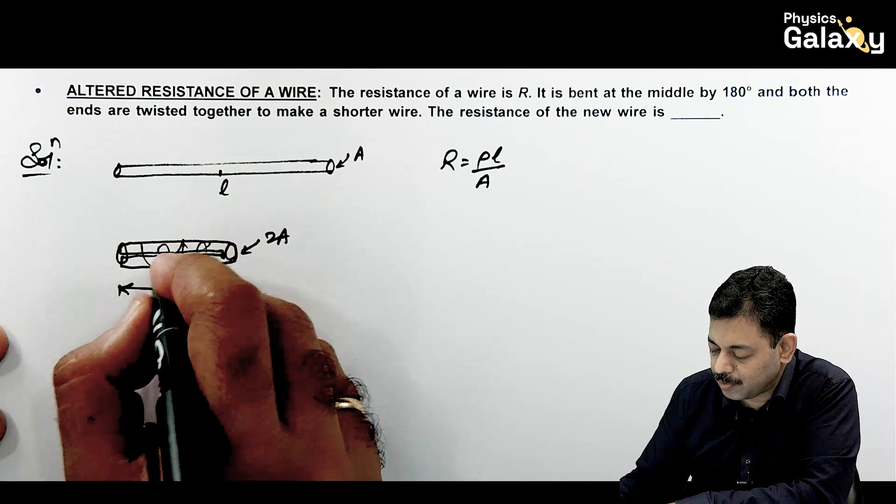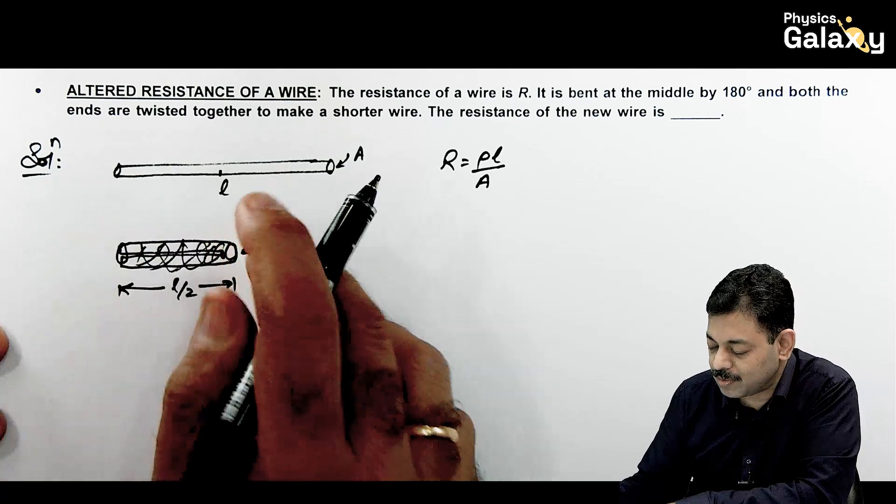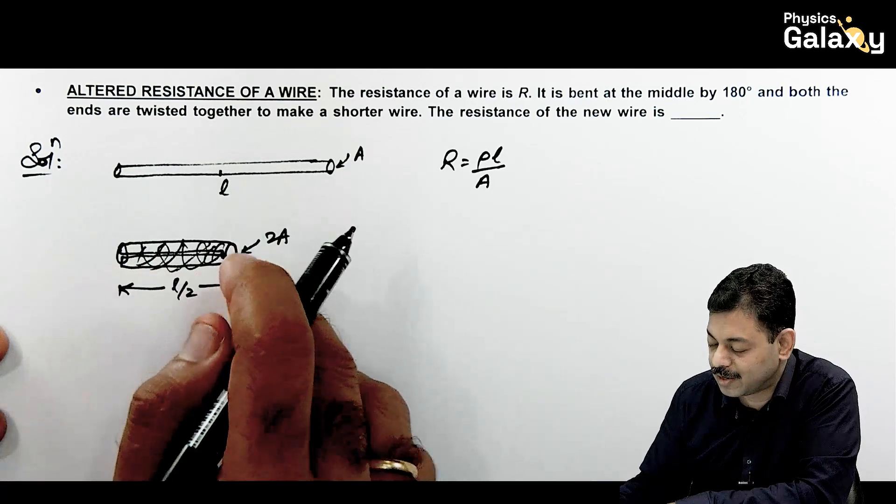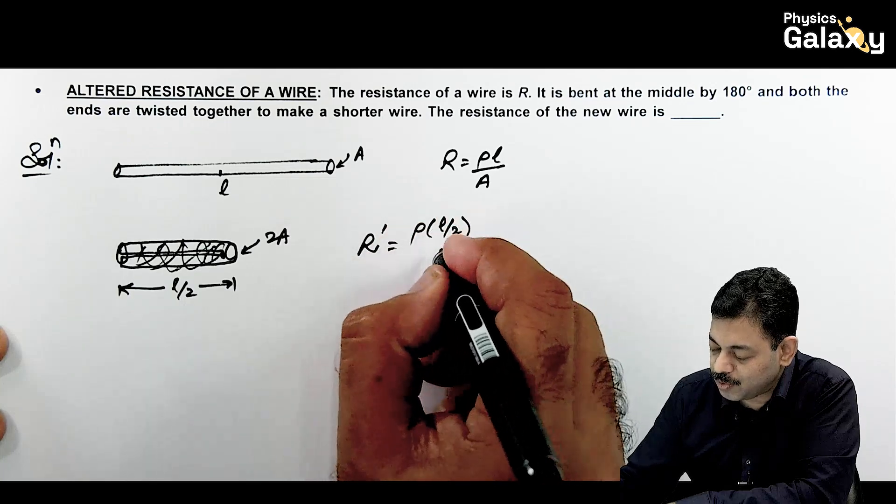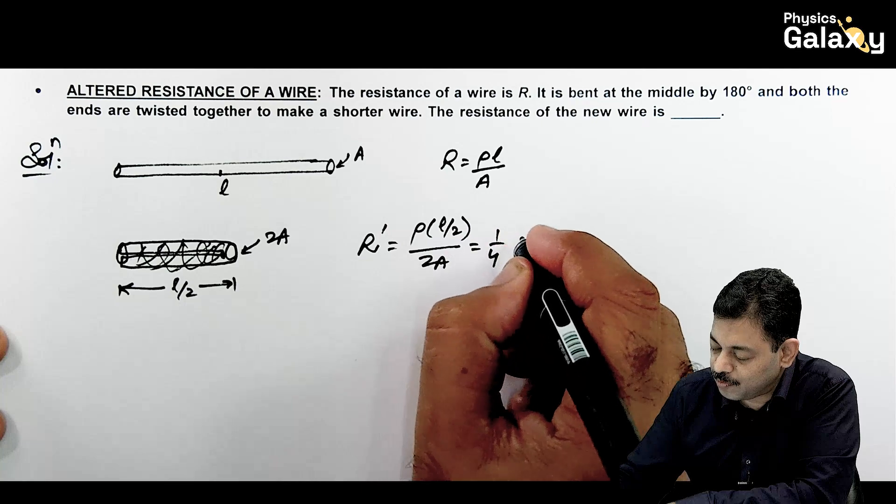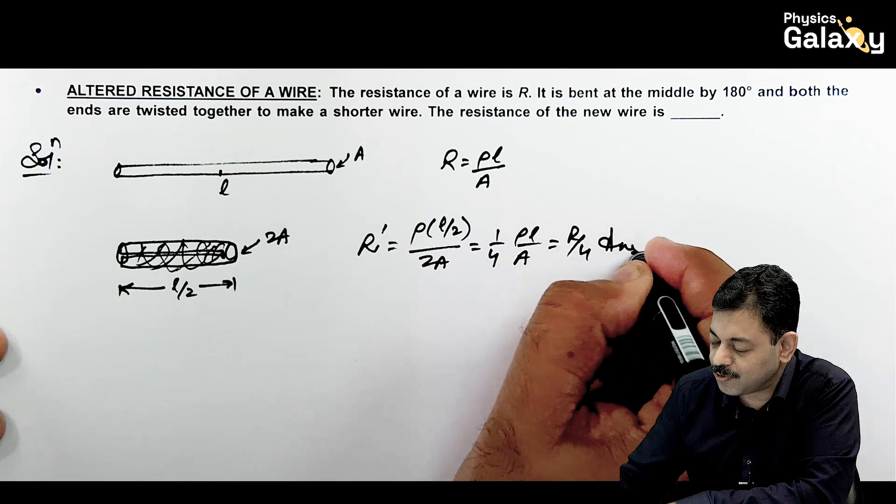And here we have twisted the wire. In this situation, being a conductor, it becomes a single wire, it behaves like a single wire having resistance R dash which is rho, length is L by 2 and cross sectional area 2A. So this becomes 1 by 4 times rho L by A which will be R by 4. That is the answer for this problem.